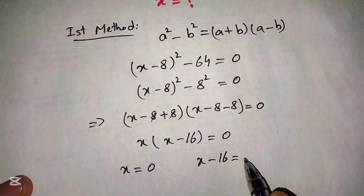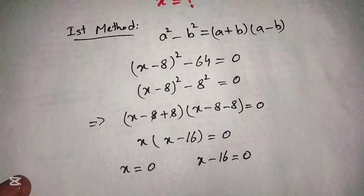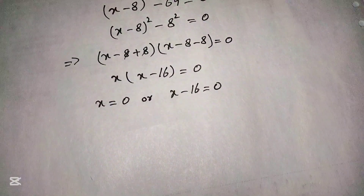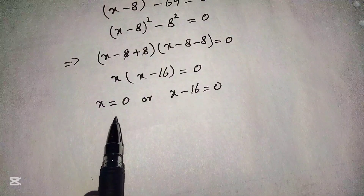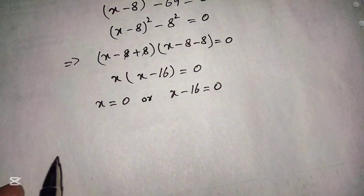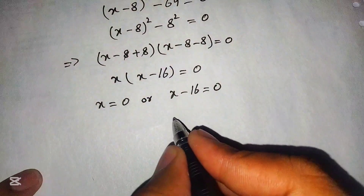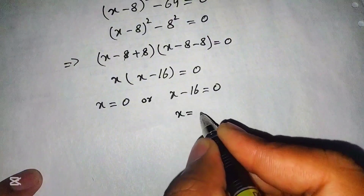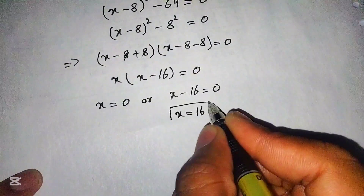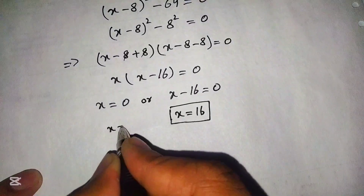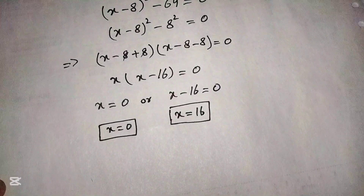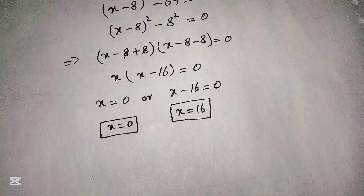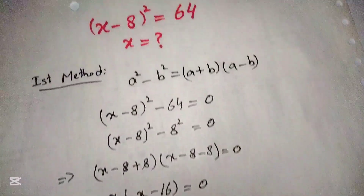Now, since two factors multiply to give 0, in mathematics either of them must equal 0. So we write x = 0 or x - 16 = 0, which gives us x = 0 or x = 16. These are the two solutions from the first method, using the formula a² - b² = (a + b)(a - b).